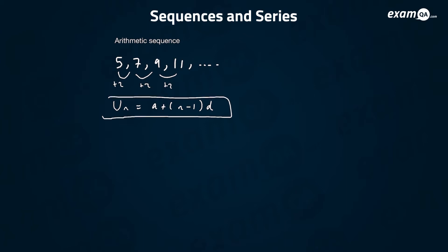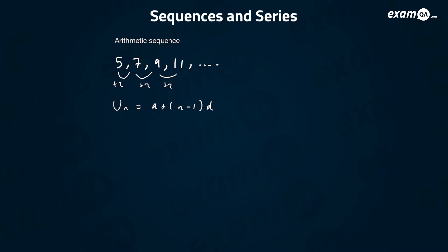The nth term of an arithmetic sequence is given by this formula on the right-hand side, where a is the first number of the sequence, n is the term you want to plug in, and d is the difference.